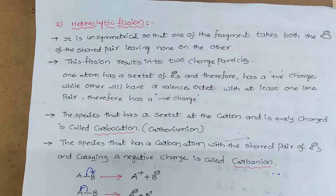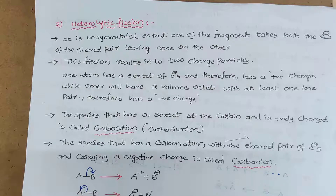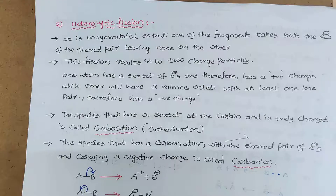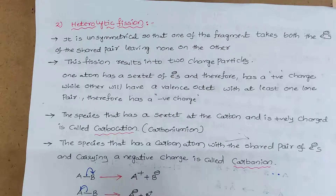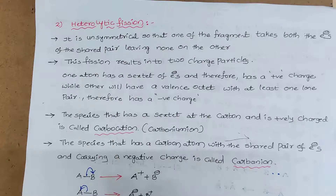Heterolytic fission of a covalent bond between two atoms results in two charged species: one carrying positive charge and another carrying negative charge. The positively charged species having six electrons (sextet) around carbon is called a carbocation. The negatively charged species having the octet electrons with at least one lone pair around carbon is called a carbanion. For example, in A-B: electrons can shift toward B completely, so B gets negative charge and A gets positive charge. Alternatively, electrons can shift toward A, so A gets negative charge and B gets positive charge.